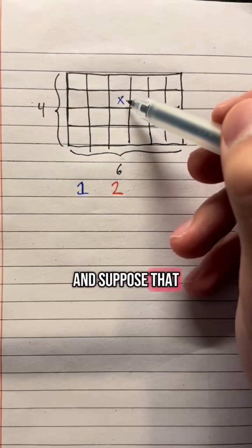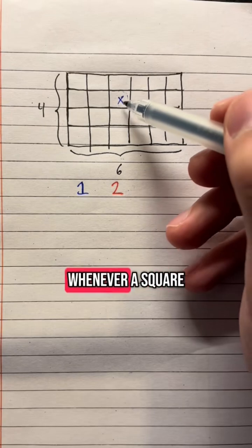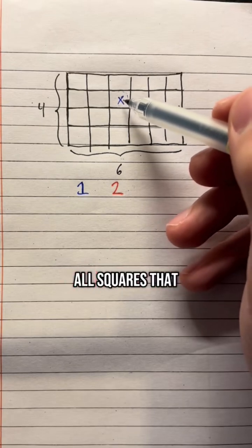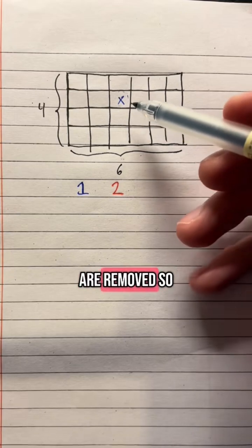And suppose that player one chooses to remove this square right here. Now the rules of the game go as follows. Whenever a square is chosen, all squares that are to the right and above the square that was chosen are removed.